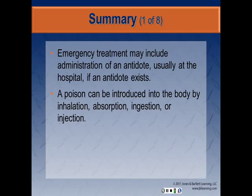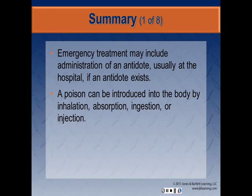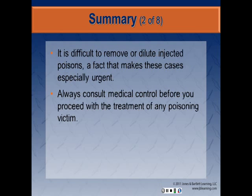In summary: poisons act acutely or chronically to destroy or impair body cells. If you believe a patient may have ingested a poisonous substance, support their ABCs and notify medical control. Management entails collecting evidence of the poison type, diluting and physically removing the agent, providing respiratory support, and transporting promptly. Emergency treatment may include administration of an antidote in the hospital if one exists. A poison can enter the body by inhalation, absorption, ingestion, or injection — it is difficult to remove or dilute injected poisons, making these cases especially urgent. Always consult medical control before proceeding with treatment.